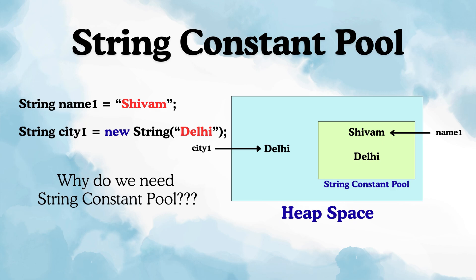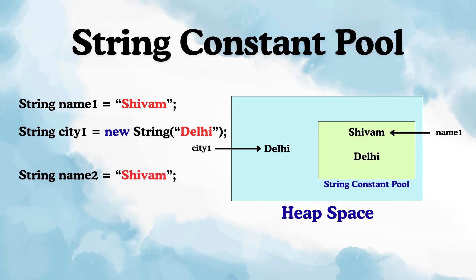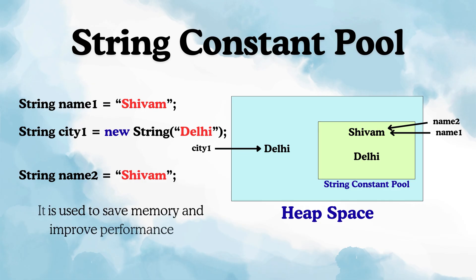Now, why do we need this pool? Let's take another example. If you do string name2 is equal to shivam, JVM will check the pool first and say: is shivam already there? Yes, it's there — we created it earlier. So JVM won't create a new one. It just makes name2 point to the same shivam literal in the pool. Both name1 and name2 are now pointing to the same object in the pool — no duplicates, no extra memory wasted. Even if you create thousands of literals with the same value, all their reference variables will point to the single literal in the pool. That's the whole reason the string constant pool exists — it's there to save memory and improve performance.